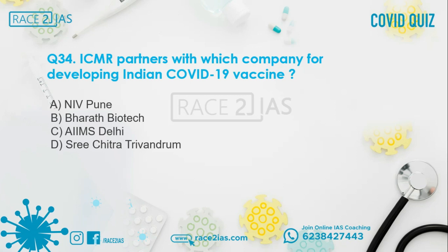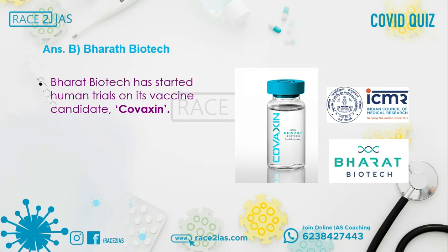Question number 34: ICMR partners with which company for developing India's COVID-19 vaccine? Option A: NIV, Pune. Option B: Bharat Biotech. Option C: AIIMS, Delhi. Option D: Sri Chitra, Trivandrum. The right answer is Option B, Bharat Biotech. Bharat Biotech has started human trials on its vaccine candidate, Covaxin.